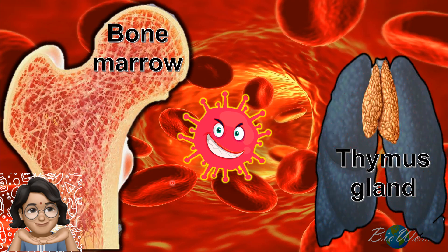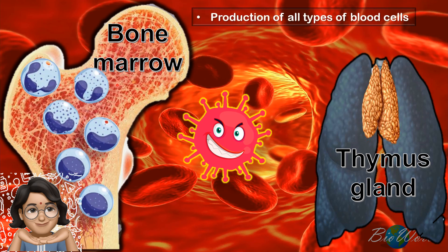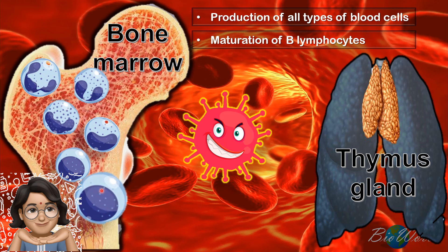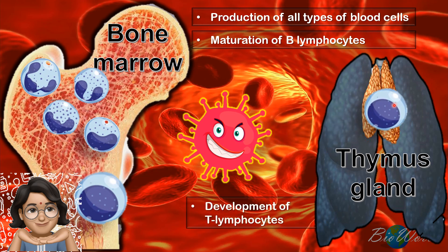These immune cells originate from either the bone marrow or the thymus gland. The bone marrow synthesizes many types of blood cells, including red blood cells, platelets, as well as white blood cells — which include the granulocytes: basophil, eosinophil, and neutrophil — as well as the agranulocytes, which include lymphocytes and monocytes. These lymphocytes will remain in the bone marrow to develop into mature B lymphocytes, while some will travel to the thymus gland to develop into T lymphocytes. Both B lymphocytes and T lymphocytes will destroy these pathogens.